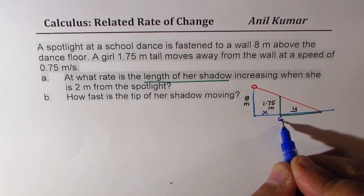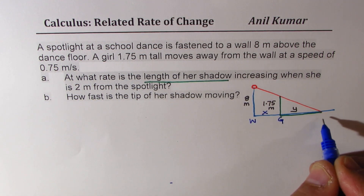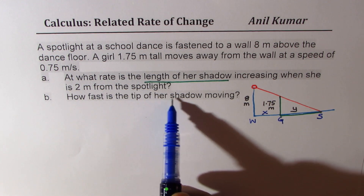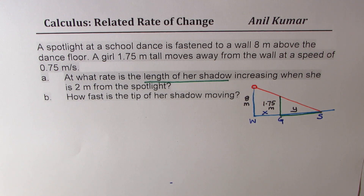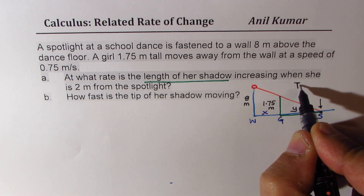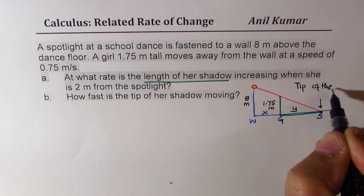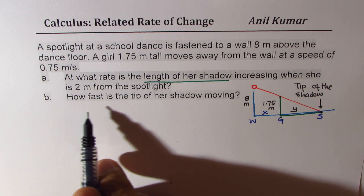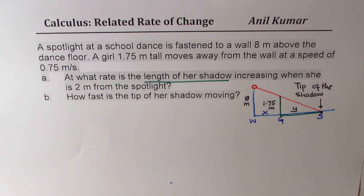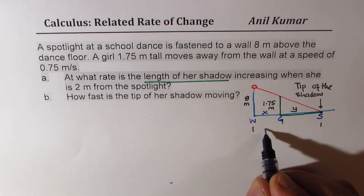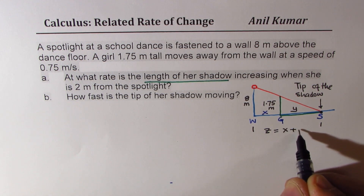Here is the girl. When we say tip of the shadow, it means the tip right there — that is the tip of the shadow. In part B, how fast is the tip moving? That is the total distance. We will say let this distance be z, which is equal to x plus y.